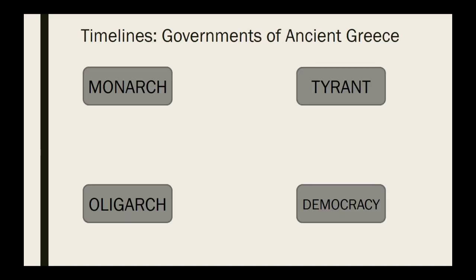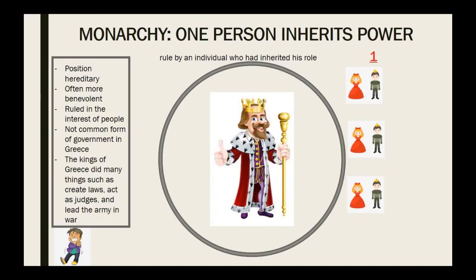For the governments of Ancient Greece, we focus on four, as you have read: monarchs, oligarchs, tyrants, and democracy. So the monarch, as you can see here, is one person who inherits the power — ruled by an individual who has inherited his role. The position is hereditary. Inside this circle, for all these images, is who has the power. This king has all the power.